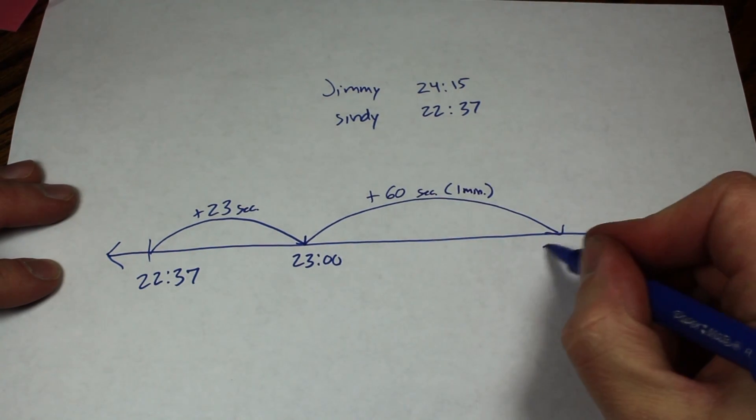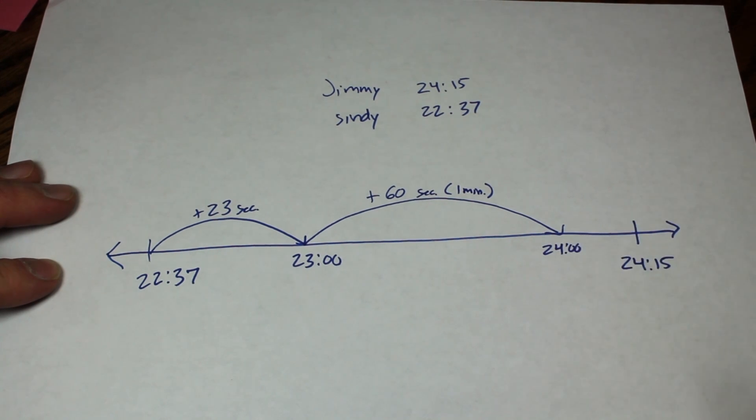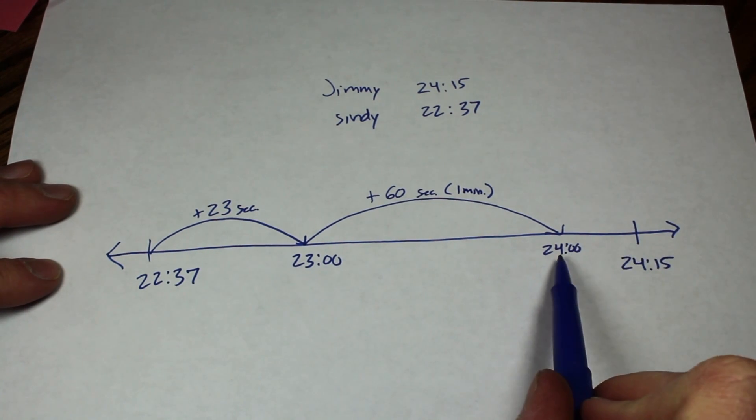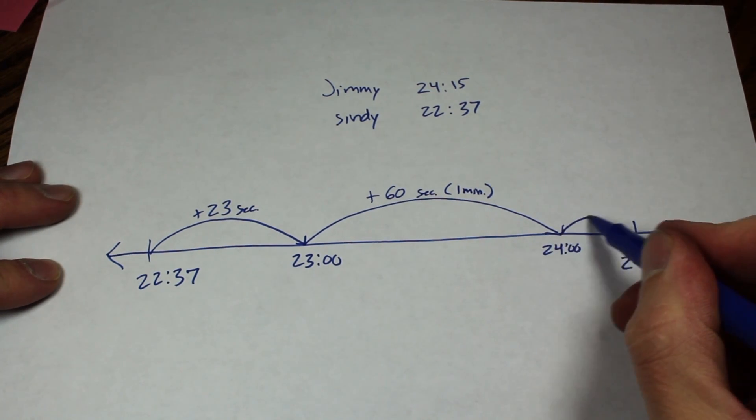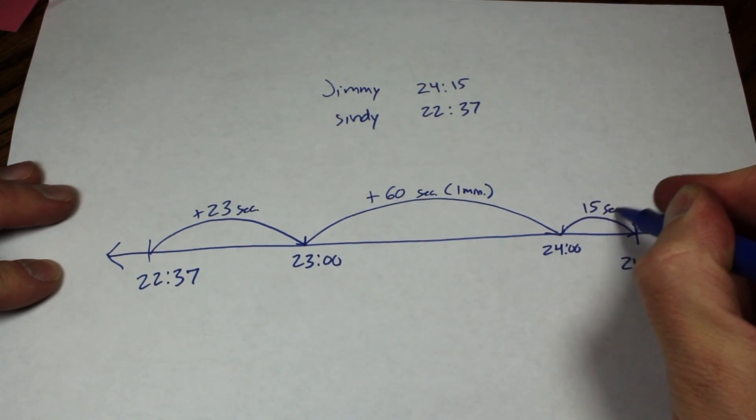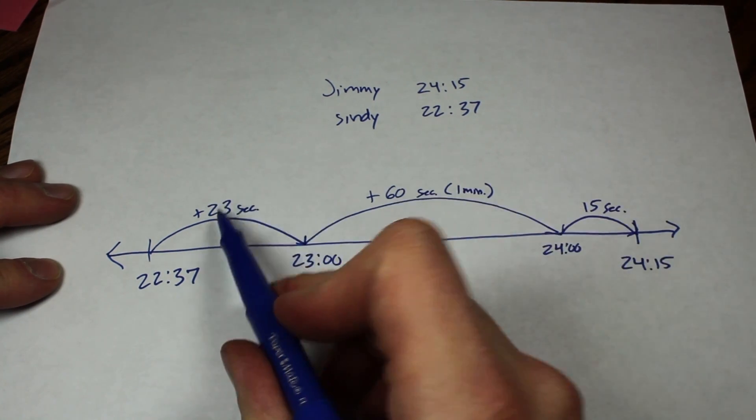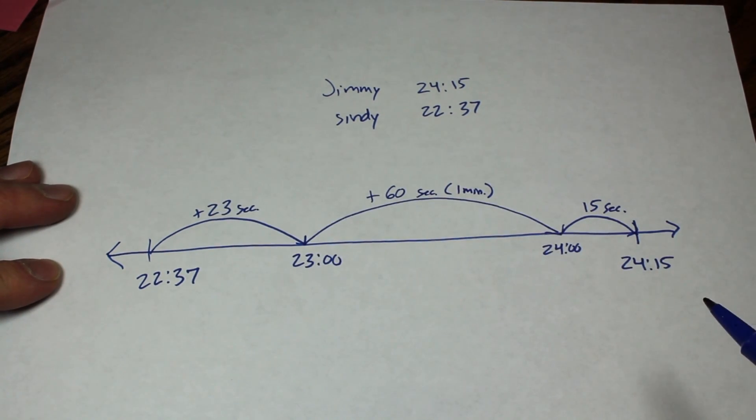And then finally, so that put me at 24 minutes. All I have to do is get from 24 minutes to 24 minutes and 15 seconds, which means that it's just 15 more seconds to go. And we add these three numbers up, and that gives us our total difference in time between the two racers' times.